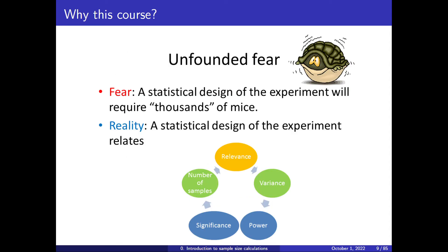There is an unfounded fear by many researchers that a statistical design of the experiment will require thousands of mice. The reality is that the statistical design is related to five variables: relevance, variance, number of samples, significance, and power. These five variables are such that if you fix four of them, the last one is automatically determined.